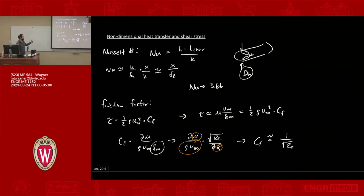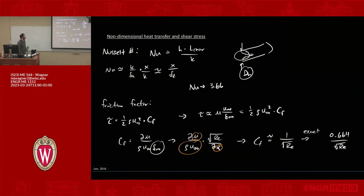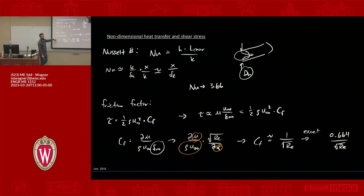The friction coefficient tells you how the resulting force relates to the basic momentum expression for the fluid. The exact formulation for laminar flow is Cf = 0.664 / sqrt(Re). So we have two non-dimensional representations: the Nusselt number for non-dimensional heat transfer, and the friction coefficient for non-dimensional shear stress.